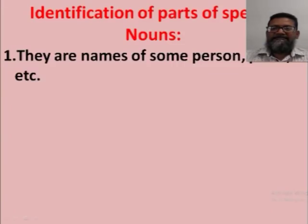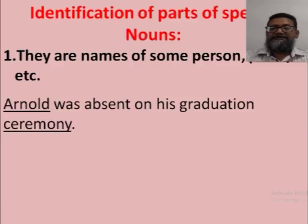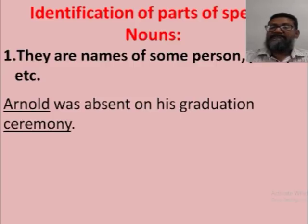Now, starting with nouns. Nouns are the names of a person, place, etc. For example: 'Arnold was absent on his graduation ceremony.' Arnold is the name of a person — it's a noun. Ceremony is the name of an event — so it's also a noun.